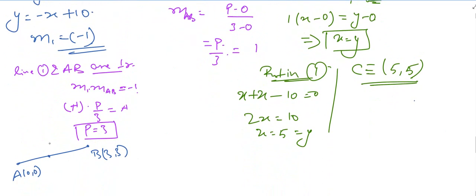C is the point through which line 1 passes perpendicularly. We should focus on C and the ratio m to 1. Using the section formula: the x-coordinate of C is (m·x2 + n·x1) over (m + n).